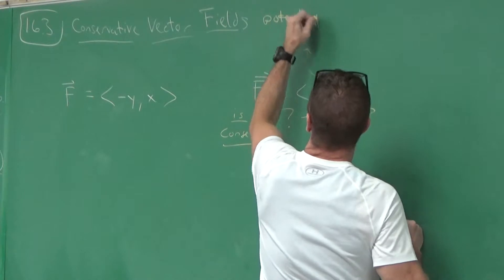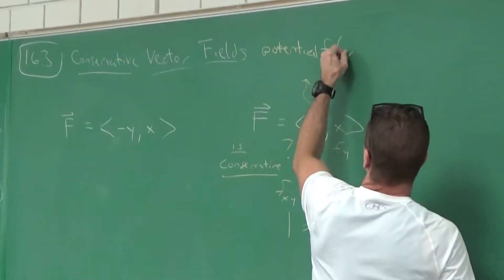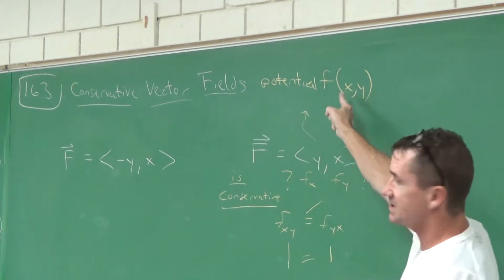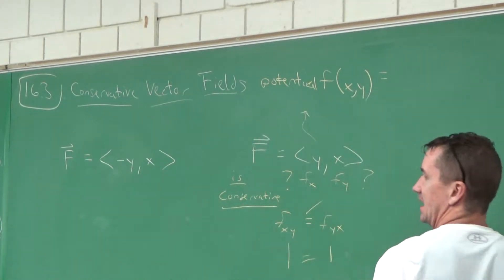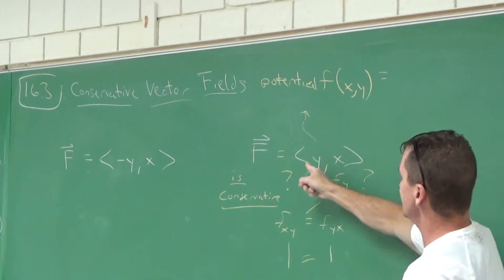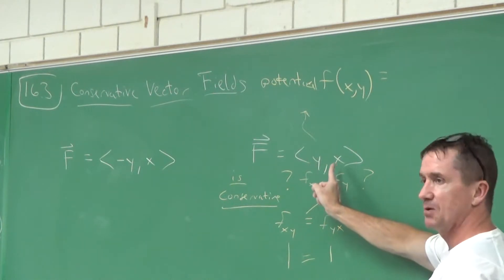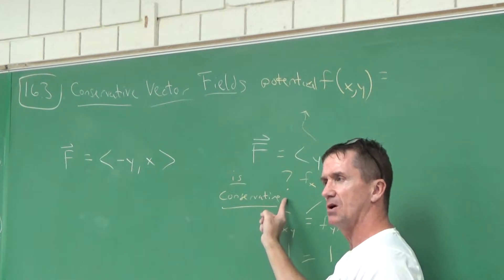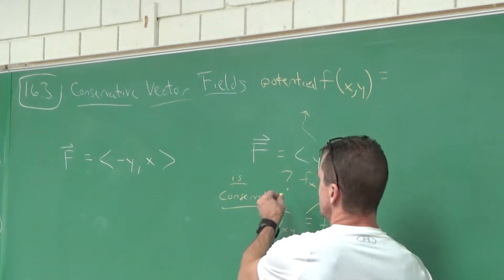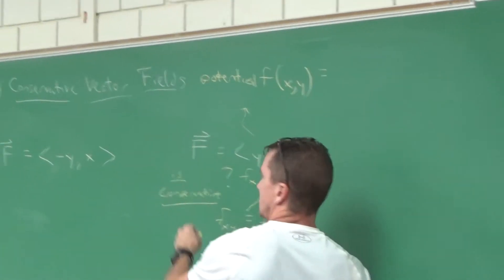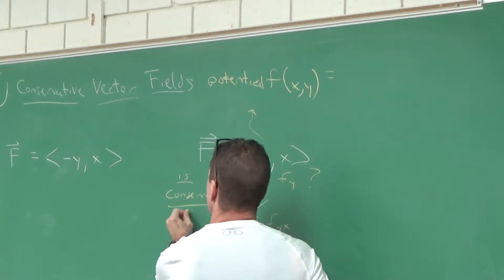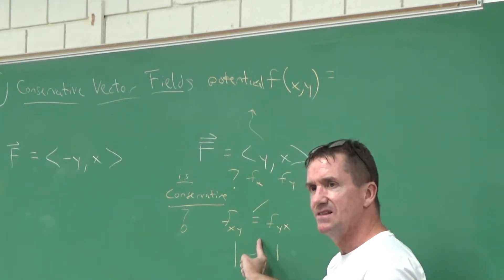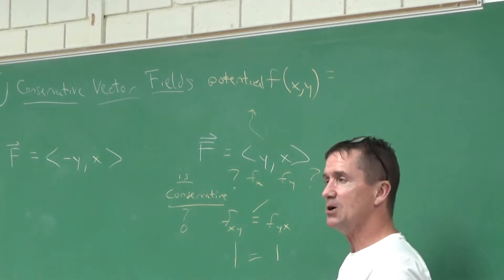If fxy equals fyx, that means there is some potential function of x and y that we can create, where that component is the partial with respect to x and the other is the partial with respect to y. I had question marks at first — I wasn't sure if the vector field was conservative. But as long as I check that condition, I know it's conservative.